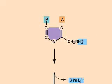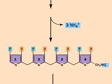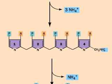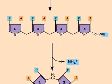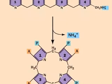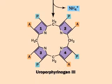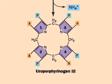We'll simplify the structure to show the remaining steps. Four molecules of porphobilinogen condense to form a linear tetrapyrrole, giving off three ammonium ions.